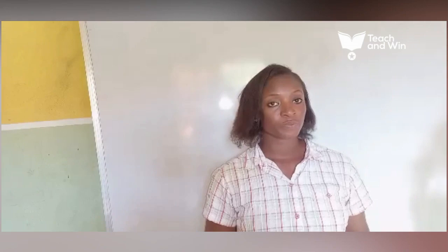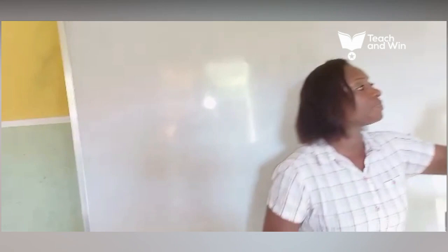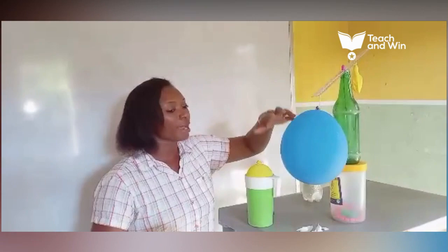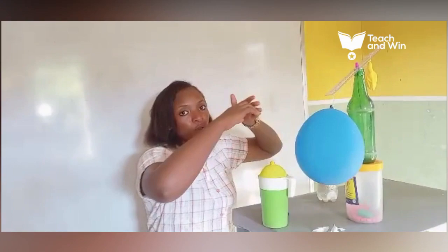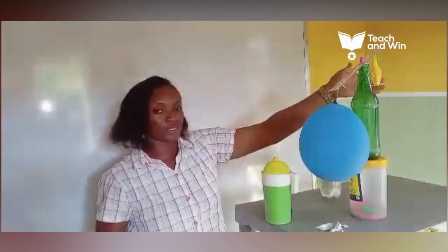Now look at these two balloons. What can you see? The blue balloon has more weight than the yellow one. Very good. So why is the blue balloon having more weight than the yellow one? Because of the air inside. There is air in this balloon, but there is no air here, so we say that air has weight.